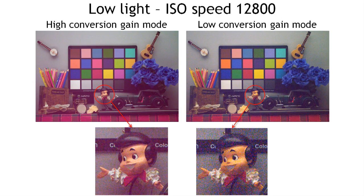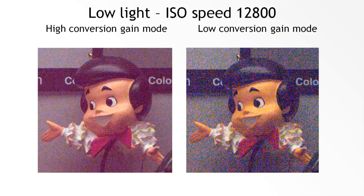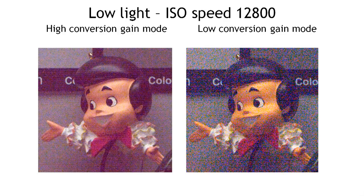To show the advantage of this mode, for comparison, we are showing on the right the same image fragment taken at the same high ISO speed, but in low conversion gain mode — this is what a traditional pixel would look like. You can see a big advantage in image quality on the left side, with much smaller noise. In quantitative terms, we are getting about 5 to 6 dB advantage in sensitivity, which is very significant for boosting image quality at low light conditions.